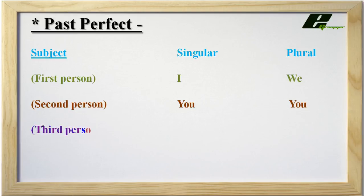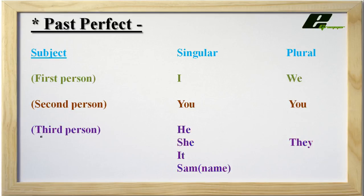Then comes third person. The person to whom we are talking about is known as third person. Singular is 'he', 'she', 'it', and 'Sam'. You can take another name instead of Sam, and in plural it comes 'they'.